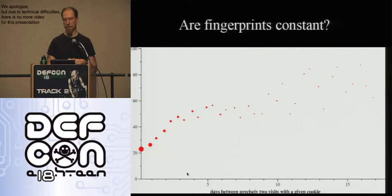As more time has passed, the likelihood that the fingerprint was different when they came back goes up. Fingerprints don't last very long — the half-life of these things is four or five days. So perhaps that's actually a really good sign. Perhaps fingerprints, while they're instantaneously identifying, aren't a stable way to track people over time.